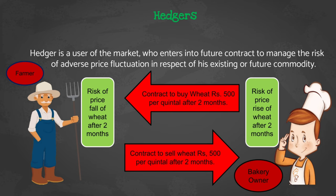So here the farmer is at risk that wheat price might decrease after two months, and the bakery owner is at risk that wheat price will increase after two months. In this case, the farmer and bakery owner enter into a future contract: the farmer will sell wheat to the bakery owner at 500 rupees per quintal after two months, and the bakery owner will buy wheat from the farmer at 500 rupees per quintal after two months. They enter the future contract to hedge their risk from future price fluctuation — that is why we call them hedgers.